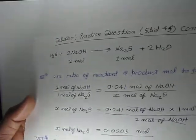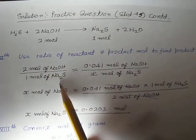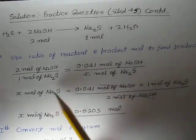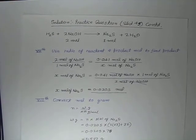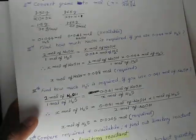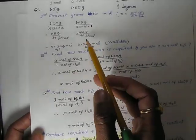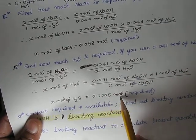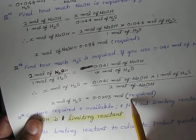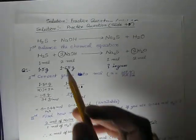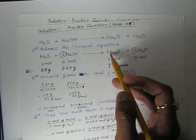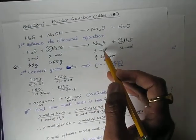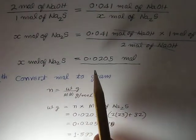Using the ratio: (1 mol Na₂S / 2 mol NaOH) × 0.041 mol NaOH = 0.0205 mol Na₂S. To completely consume 0.041 mol NaOH, we require 0.0205 mol H₂S. Since 1 mole of H₂S produces 1 mole of sodium sulfide, the moles of sodium sulfide produced equal the moles of H₂S consumed, which is 0.0205 mol of sodium sulfide.